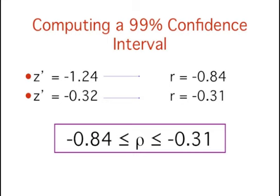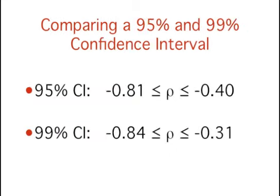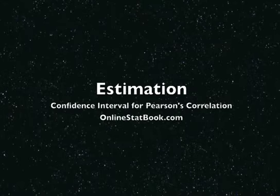The confidence interval is shown in the purple box. Naturally, the 99% confidence interval is wider than the 95% confidence interval.